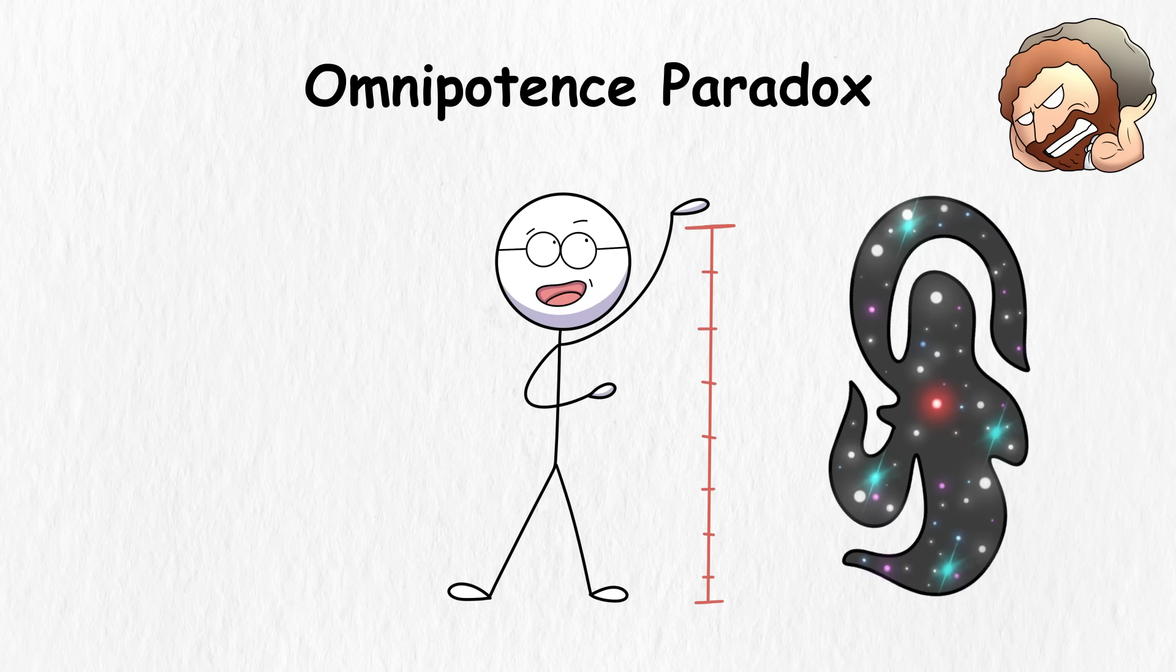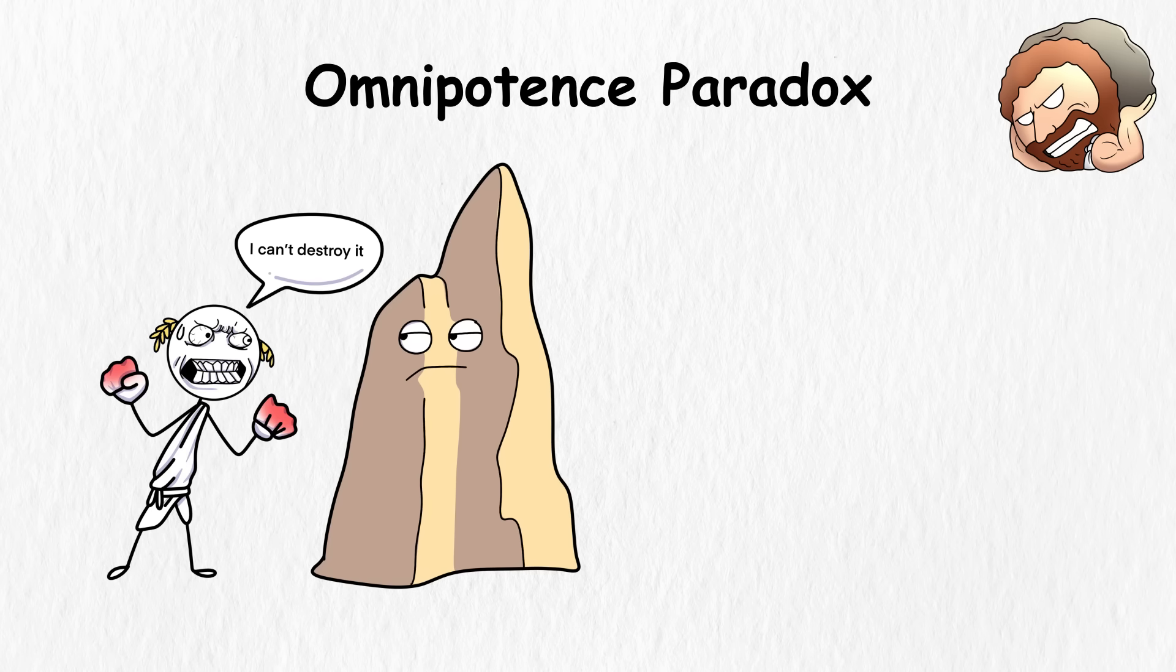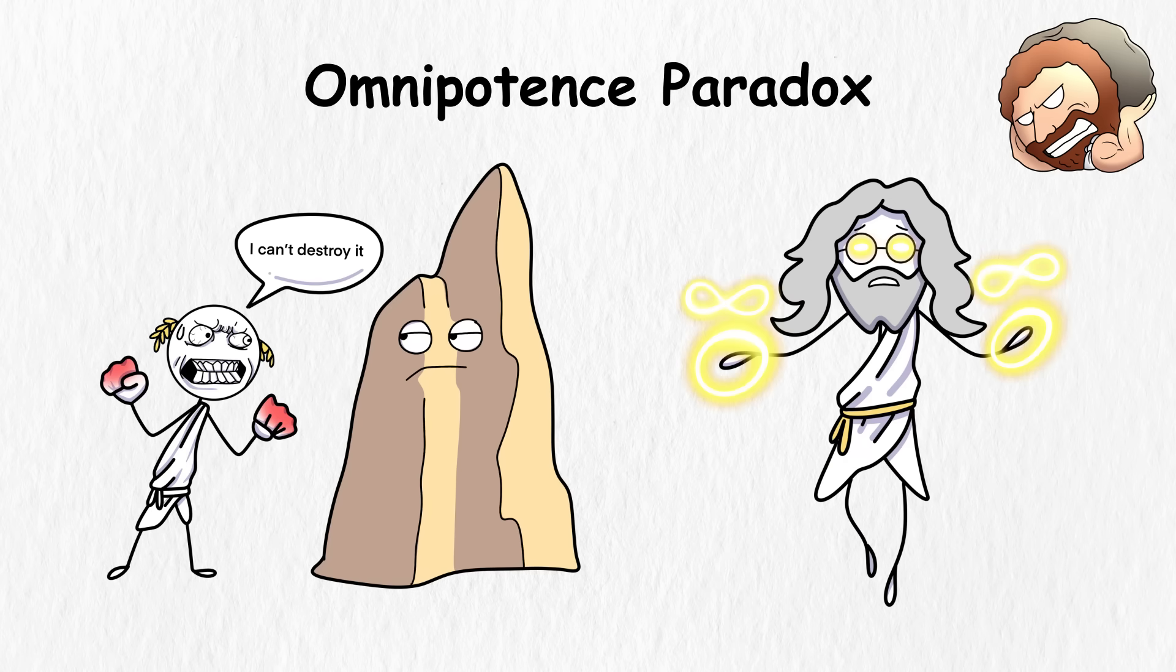The paradox goes back to the question of whether or not God exists as a truly omnipotent being. After all, if he's the top dog in the universe, he should be able to create something that not even he can destroy. But that defeats the purpose of having limitless power.